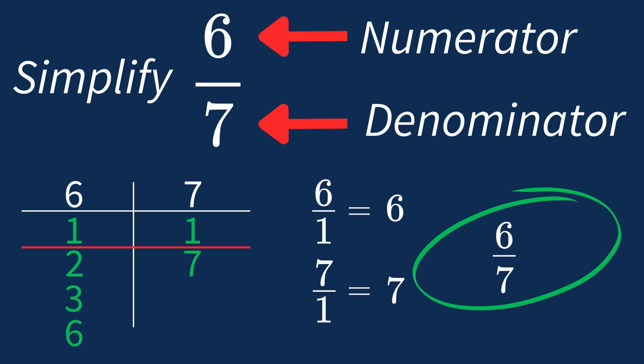So 6 over 7 is an irreducible fraction, meaning it's as simple as it can get. In future, if the greatest common factor is 1, you know that fraction is already in its simplest form.